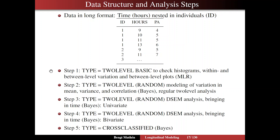Step 2 is going to be a two-level analysis, a modeling activity — two level or two level random. We're going to model the variation in the mean, in the variance, and in the correlations — that's the new feature — using the Bayes estimator. I'm going to refer to that as regular two-level analysis, as opposed to what we do in step 3, which is a two-level, perhaps a two-level random DSEM analysis, where we bring time into the picture.